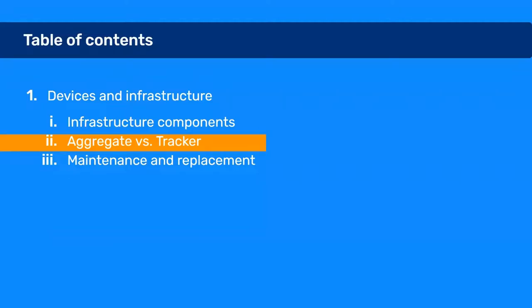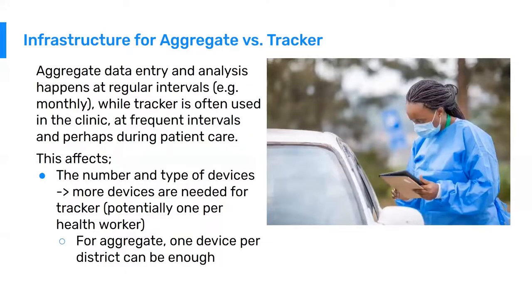Next, I will talk about the difference between aggregate and tracker DHIS2 programs, and how that impacts infrastructure. Aggregate data entry and analysis happens at regular intervals — for example, monthly — where somebody enters data in a clinic, facility, or district office. Whereas if tracker is used, it's often used in the clinic, sometimes at point of care when seeing the patient, so at much more frequent intervals.